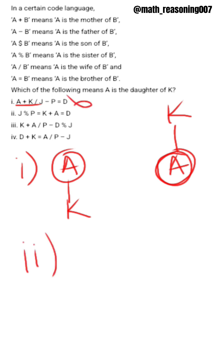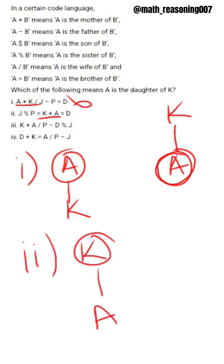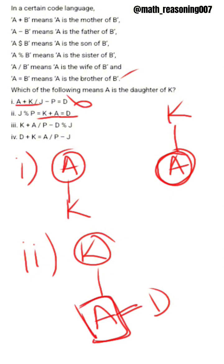From option 2, K plus A. Here K is mother of A. And we need to find the gender of A. A equal to B — here A is brother of D, so here A is male. But we need A as female, so this is wrong.